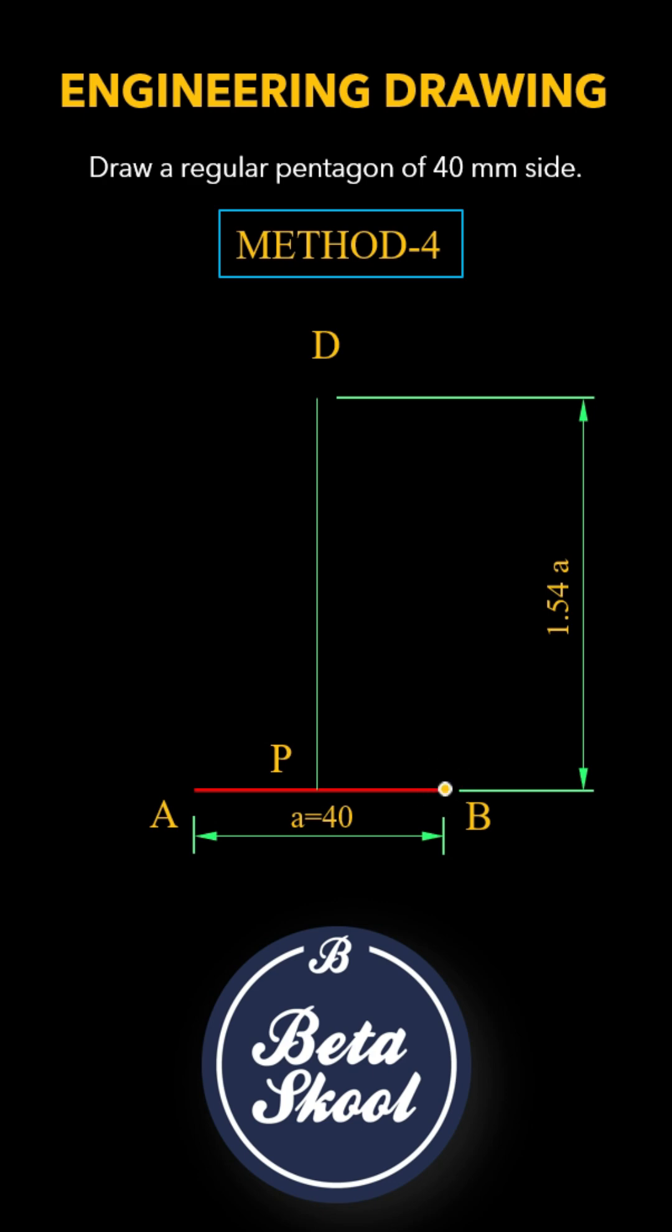With our compass set to the length of AB, we swing arcs from points B and D, where they intersect as point C.